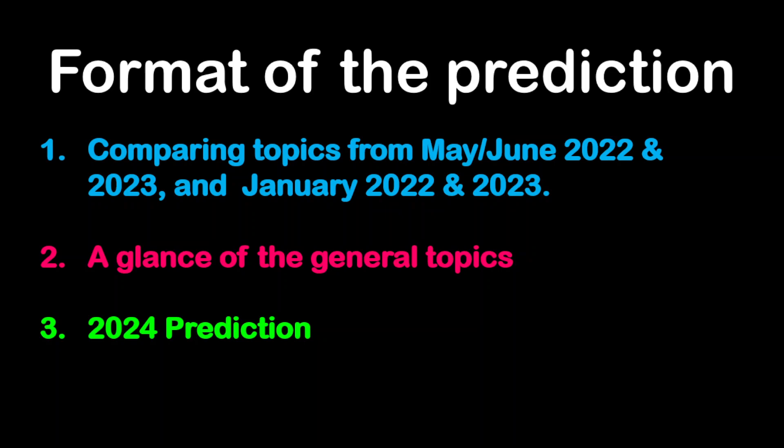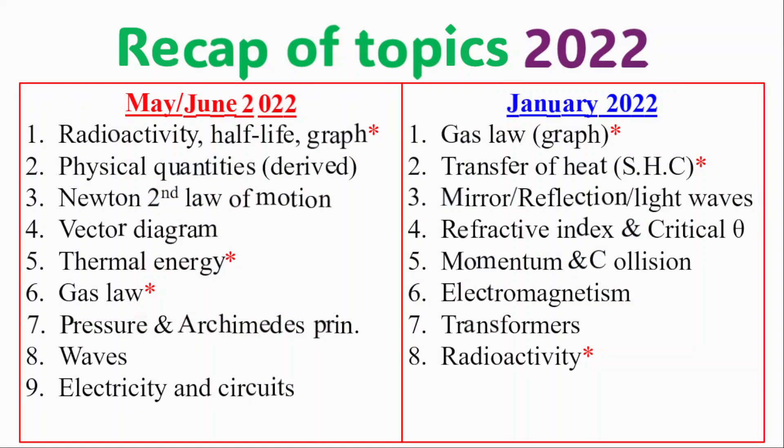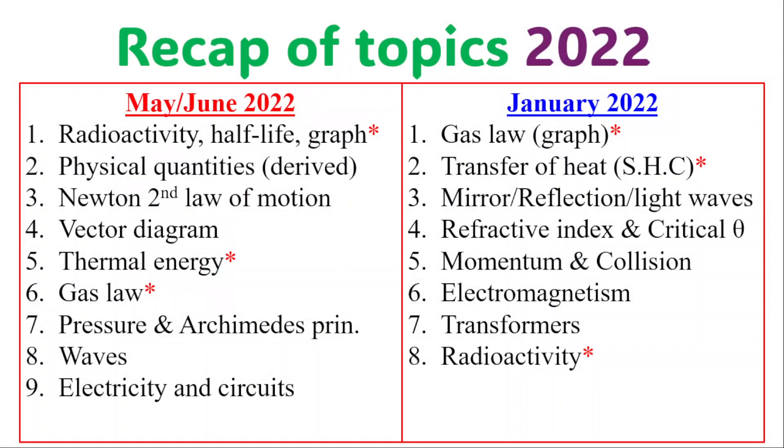All right, so firstly, the recap of the 2022 papers, May/June and January. In May/June 2022, they tested radioactivity, half-life, and of course there was a graph on half-life. Question number one is always a graph, so look out for that. Physical quantities, and specifically they talk about derived quantities. They look at Newton's second law of motion, vector diagrams, thermal energy, gas laws.